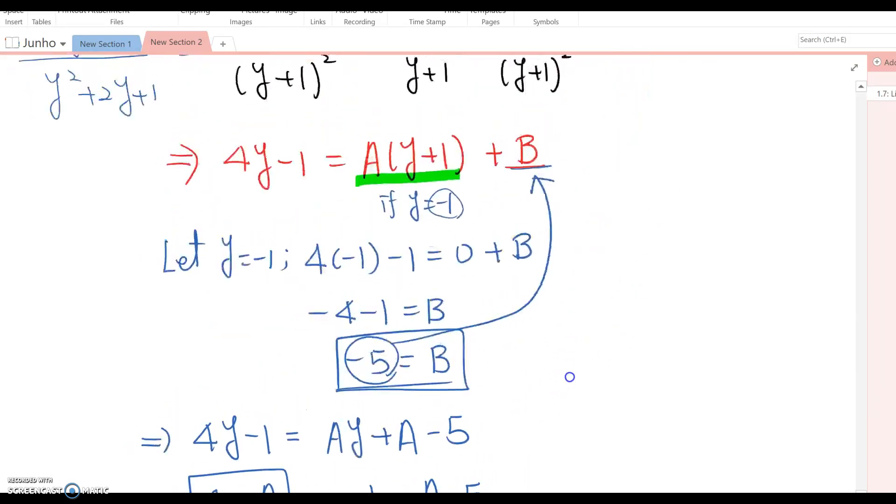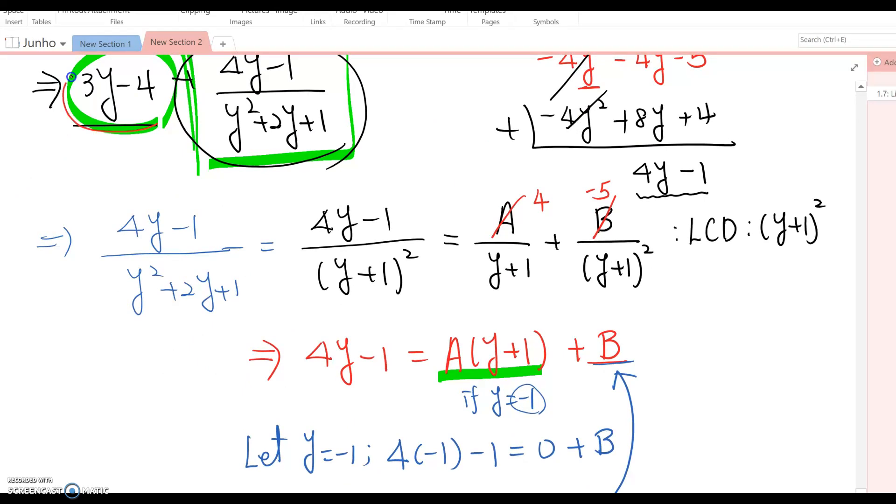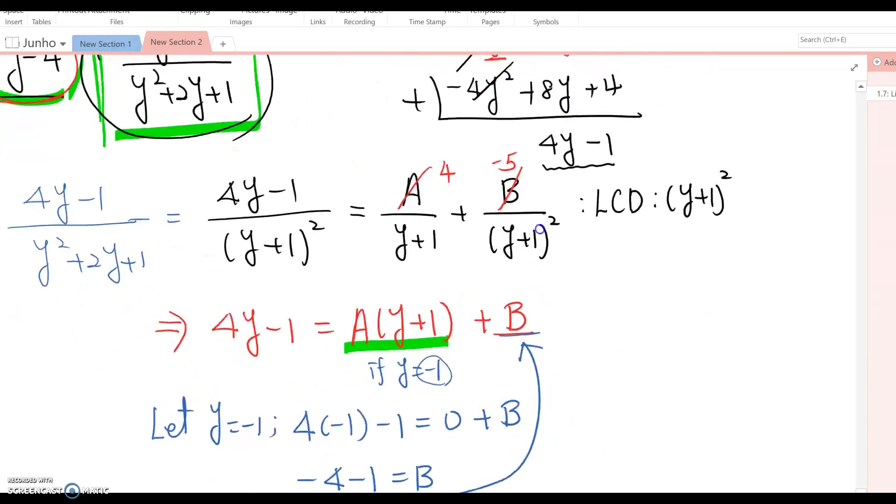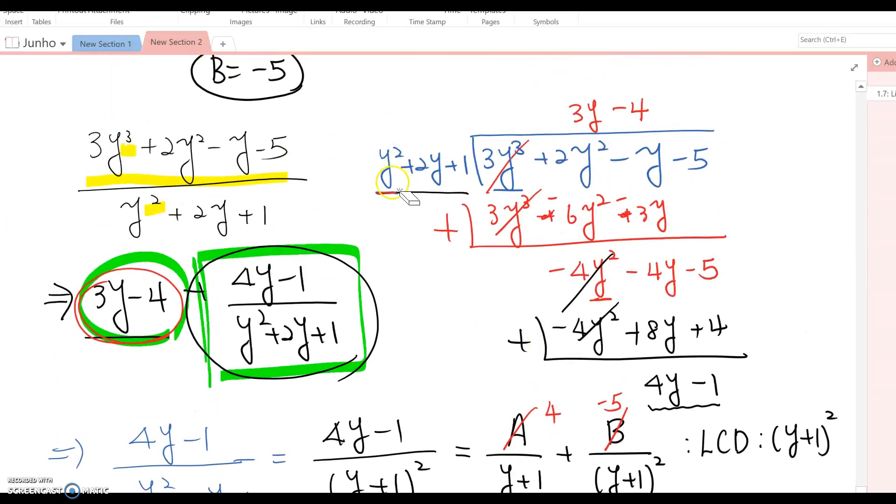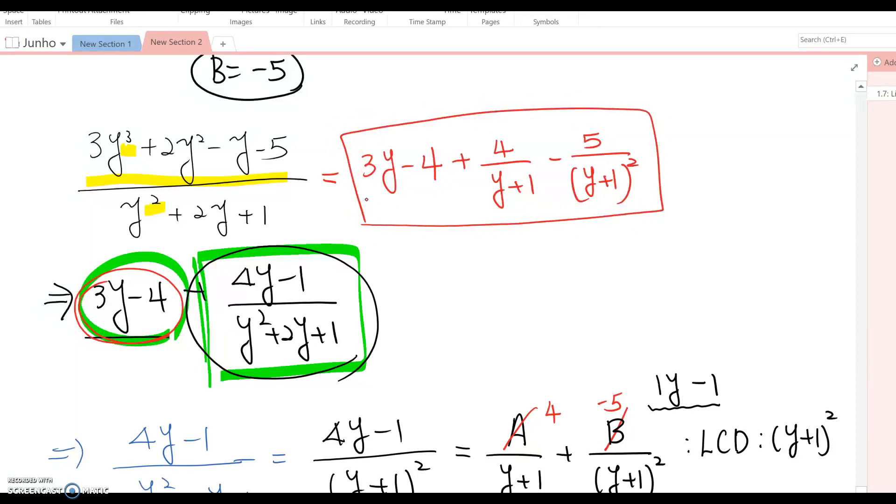Don't forget we have the quotient already. Therefore, this rational expression becomes 3y - 4 + 4/(y + 1) - 5/(y + 1)². That's the answer for this rational expression's partial fractions.